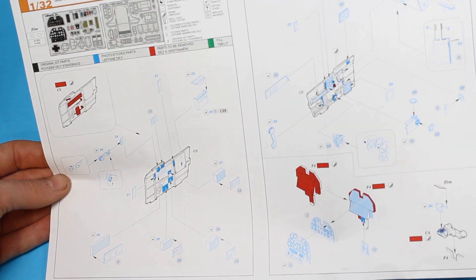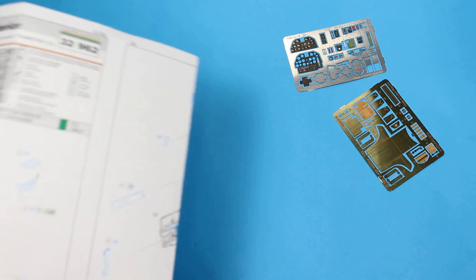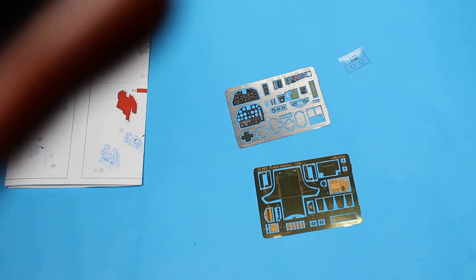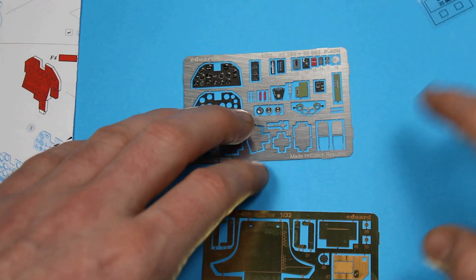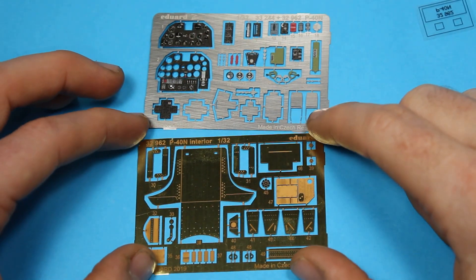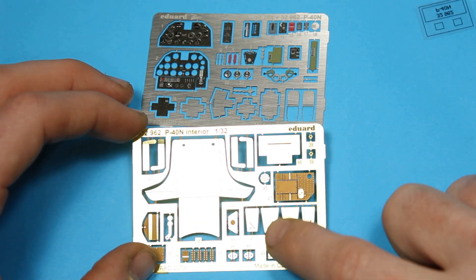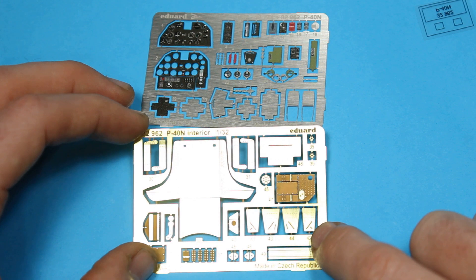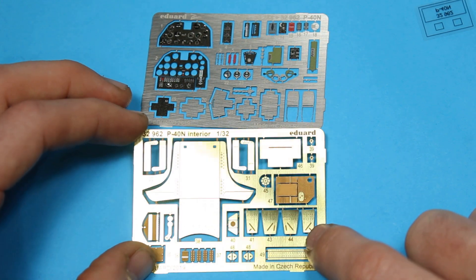Typical stuff from Eduard - we know what we're getting with this, so I just think it's worth having some of that extra detail on the cockpit sidewall. You'll see here mainly you've got placards. This set caters for quite a comprehensive sheet here which gives you the seat, the fittings, and a few parts for the floor. And this is the inside of the cowl flaps that open up, so it's a nice touch.